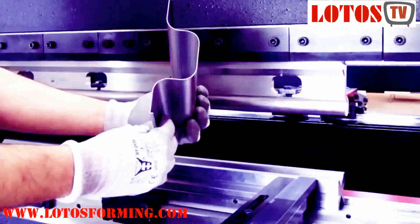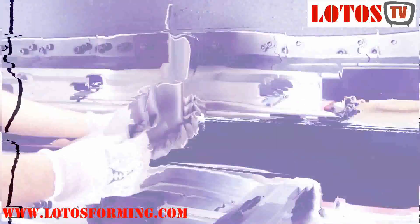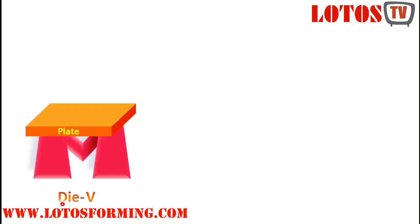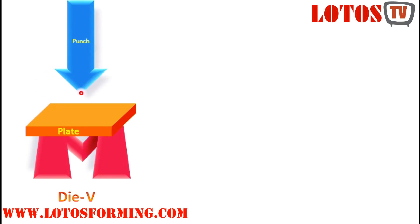Standard tooling is often used for the punch and die, allowing a low initial cost and suitability for low volume production. Custom tooling can be used for specialized bending operations but will add to the cost. The tooling material is chosen based upon the production quantity, sheet metal material, and degree of bending.